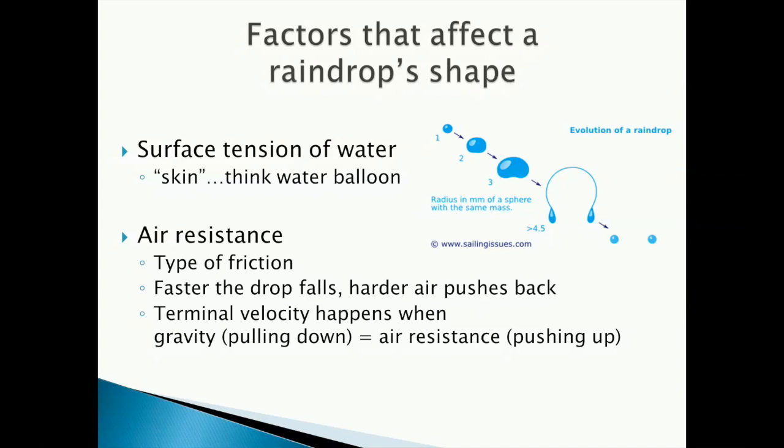Next is air resistance. Air resistance is a type of friction. The faster the drop falls, the harder the air pushes back on it. At some point, the drop will be traveling so fast that the force of gravity pulling it down will be equal to the air resistance or the force of the air pushing it back up. At this point, the drop no longer accelerates and its velocity remains constant, as large as it can be. This is called the terminal velocity.